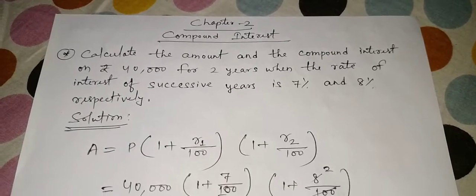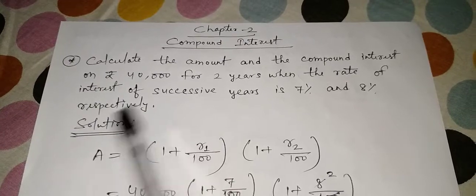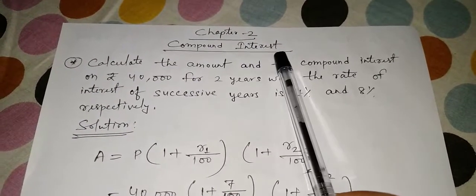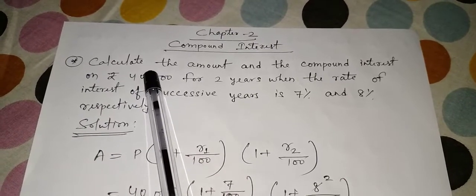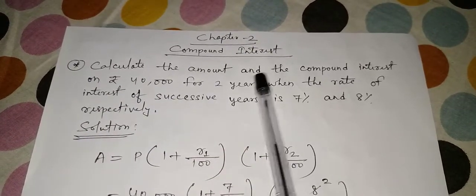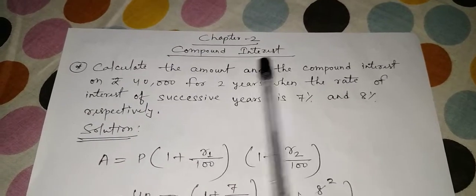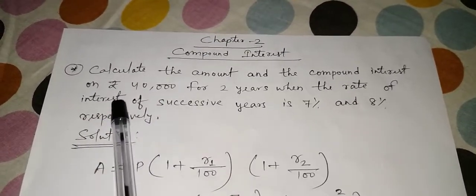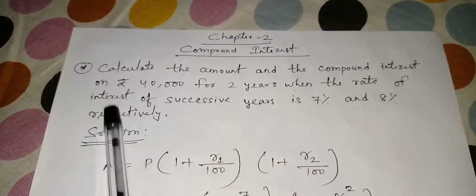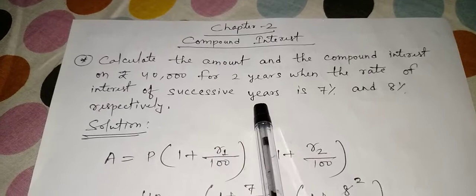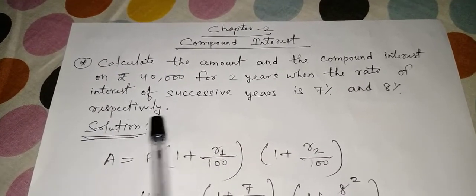Class 9 children, today we will learn some more important questions from the chapter compound interest. So here I begin a question: calculate the amount and the compound interest on ₹40,000 for two years when the rate of interest of successive years is 7% and 8% respectively.